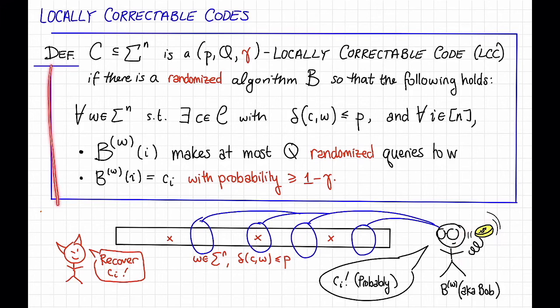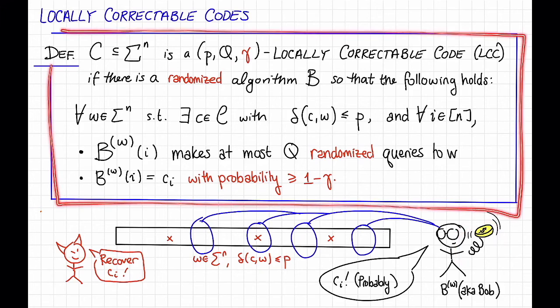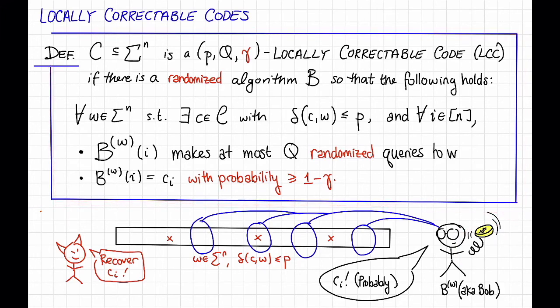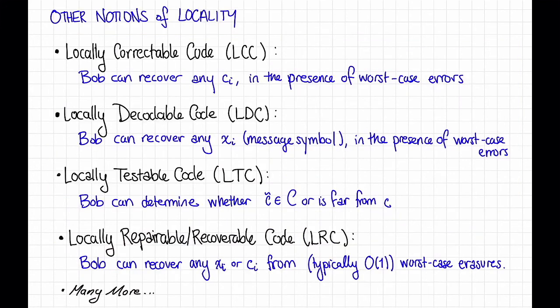Okay, so this is the definition of a locally correctable code. And, as we will see in future videos, it is actually possible to get locally correctable codes with non-trivial parameters. Before we talk about that, though, I just want to mention briefly a few other notions of locality.